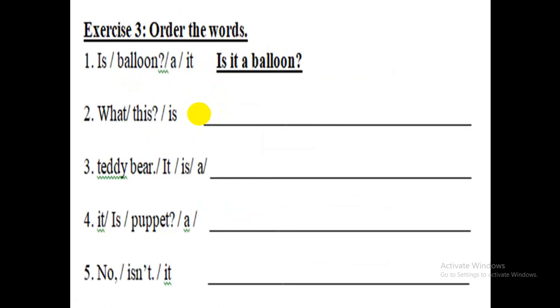Exercise 3. Order the words. You look at number 1. It's the example. We do number 2. What this is. Your order. What is this? Yes, well done. The others, please do it the same.